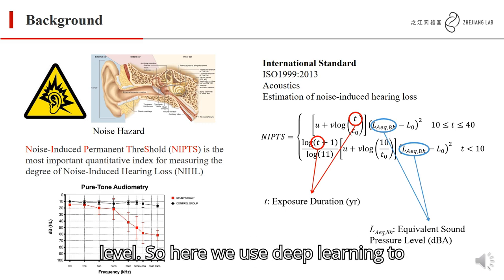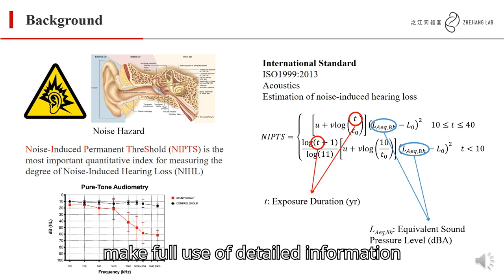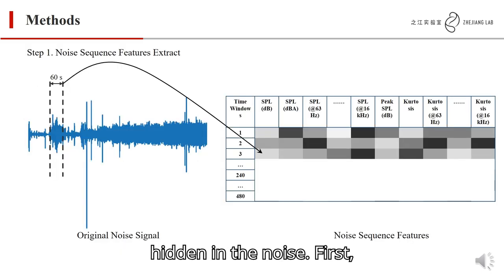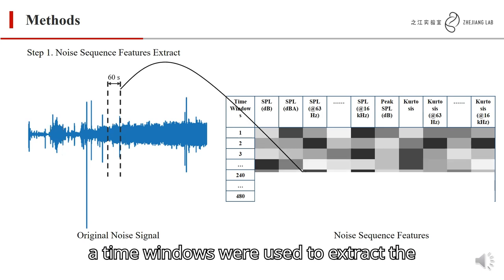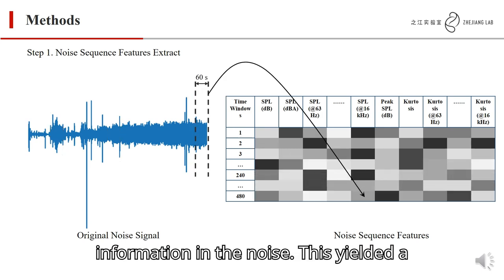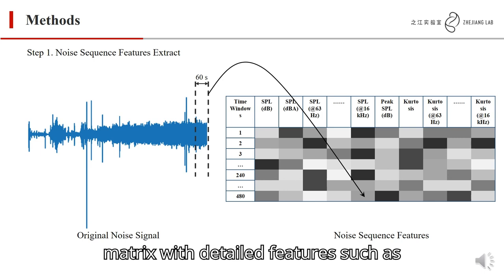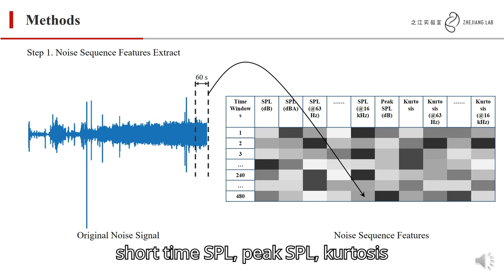Here, we use deep learning to make full use of detailed information hidden in the noise. First, a time window was used to extract information in the noise. This yields a matrix with detailed features such as short-time SPL, peak SPL, kurtosis, and so on.